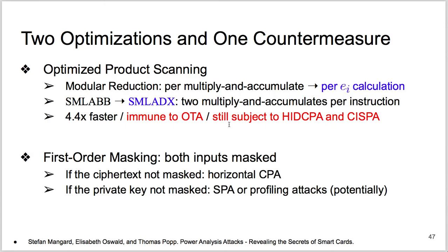We recommend first-order masking with both inputs masked as the countermeasure. If we do not mask the ciphertexts, then the multiplication is directly subject to horizontal correlation power analysis. If we do not mask the private keys, then the multiplication is potentially subject to SPA or other profiling attacks.